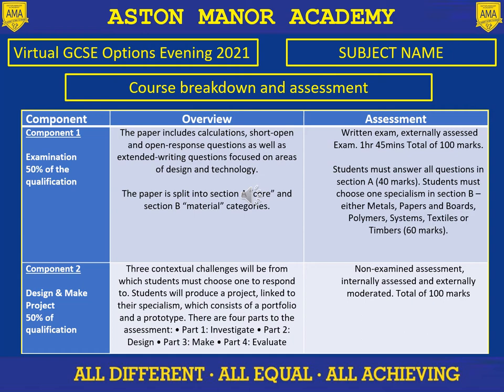The second component is a design and make project, also worth 50% of the qualification. It involves a short investigation, designing, making and evaluating a product. You can pretty much choose whatever you wanted to make. So those are the two components that make up the course.